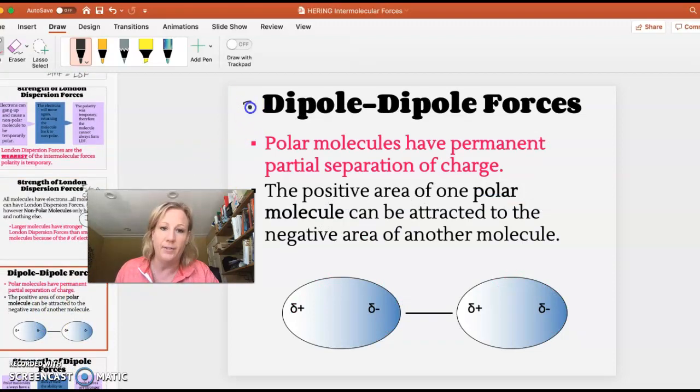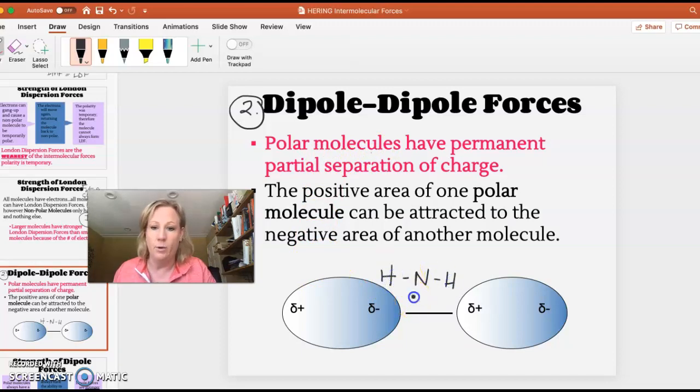Dipole-dipole, this is the second type of IMF that we're going to talk about. This is when you have a permanent dipole, permanent polar molecule. Remember how we talked about the trig pyramids with the lone pair?